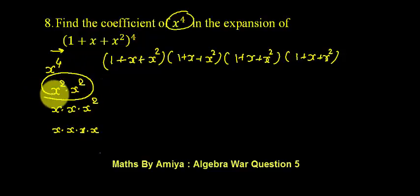We have two of the same type. Out of four brackets we have to select 2 x² terms. That is 4C2, and the rest would be the coefficient terms. So 4C2 is nothing but 6.